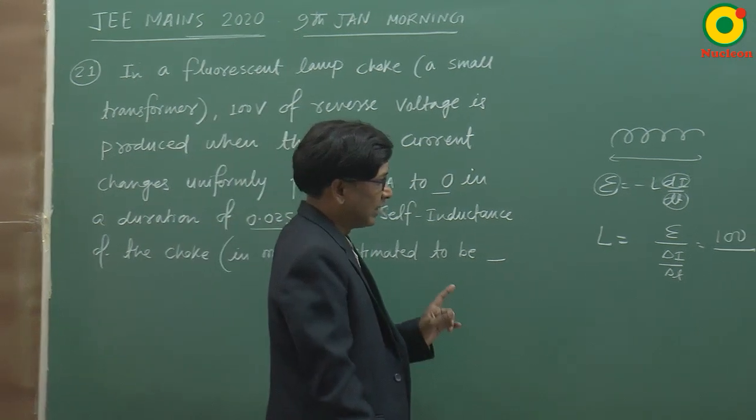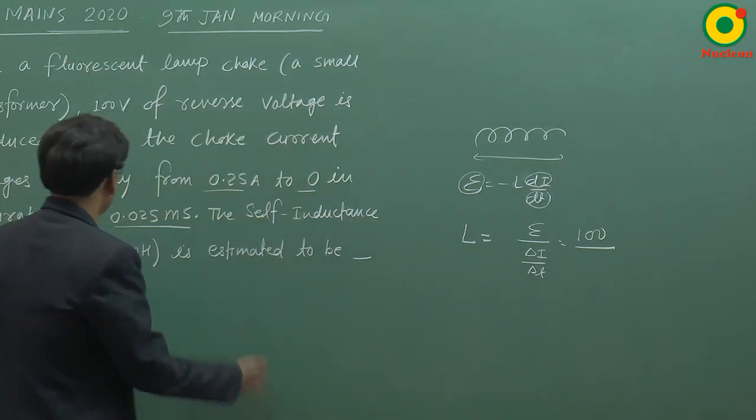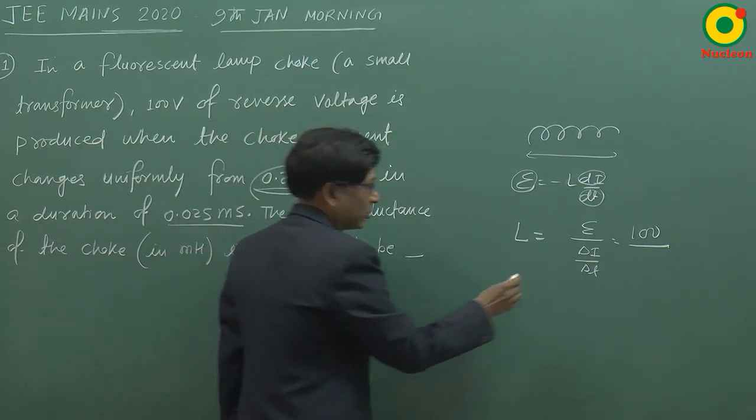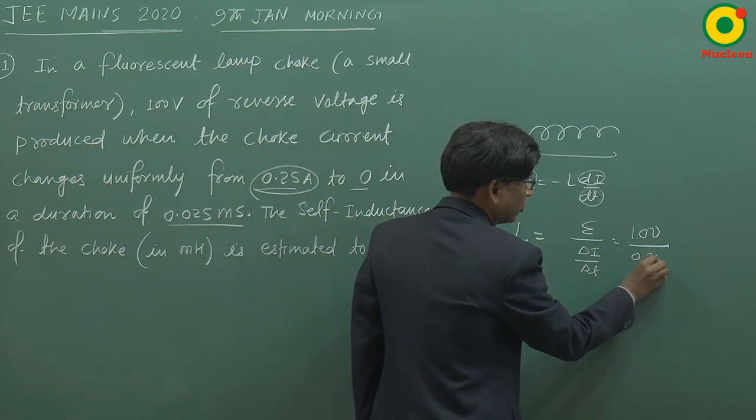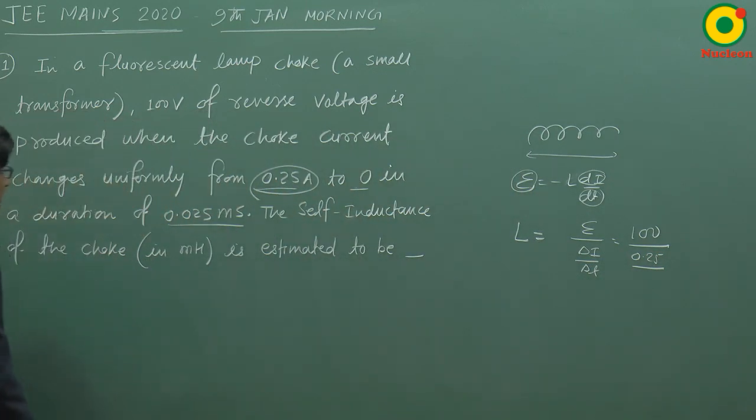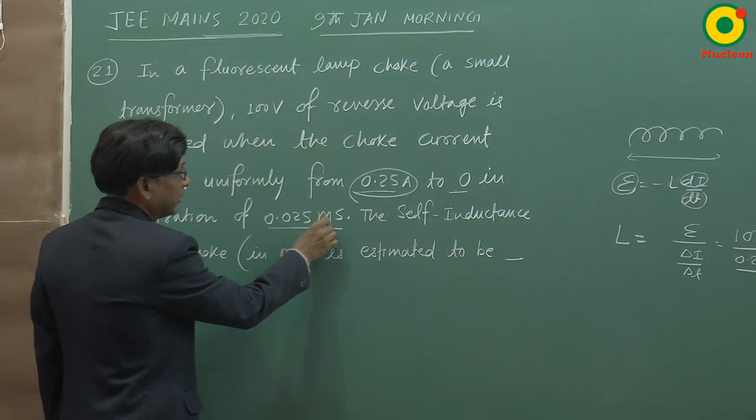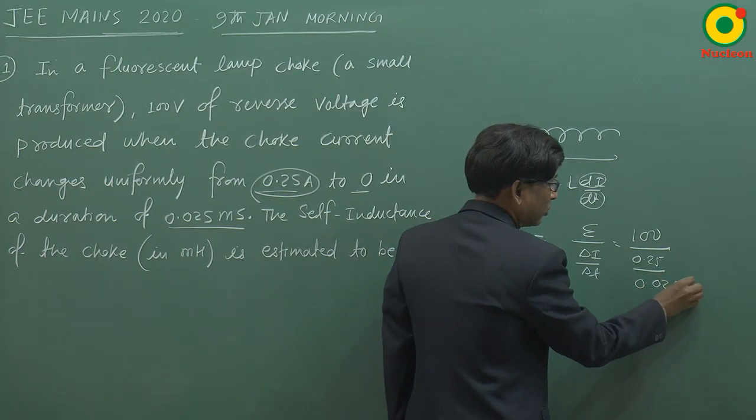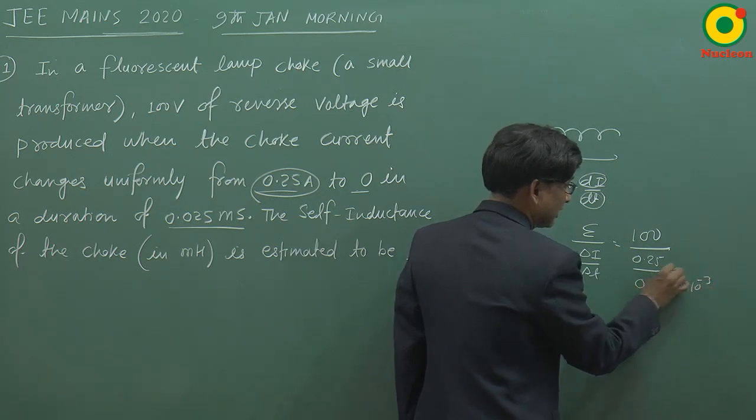तो change in current कितना है? delta I अगर निकालेंगे इसमें से, तो देखेंगे कि यह पहले 0.25 ampere था, बाद में 0 हो गया, तो change हुआ है वो हो गया 0.25 divided by time interval. time interval दिया गया है 0.025 millisecond, मतलब 0.025 into 10 to the power minus 3 seconds.